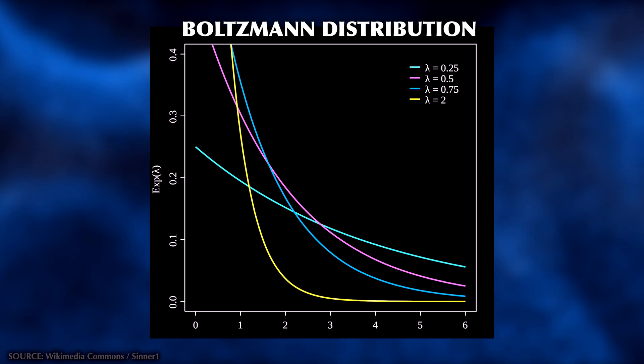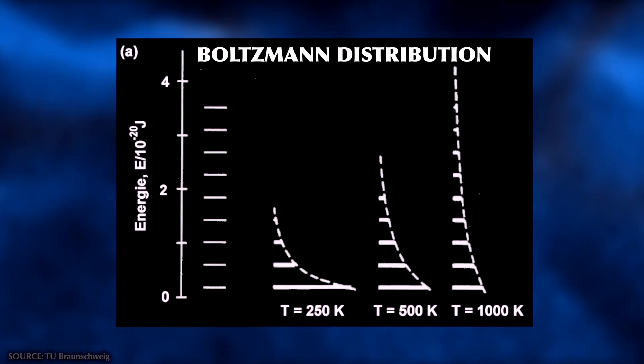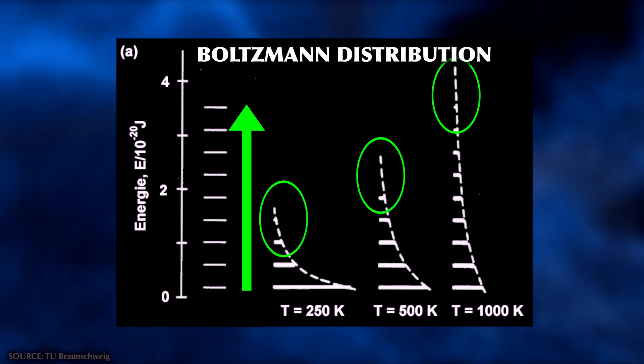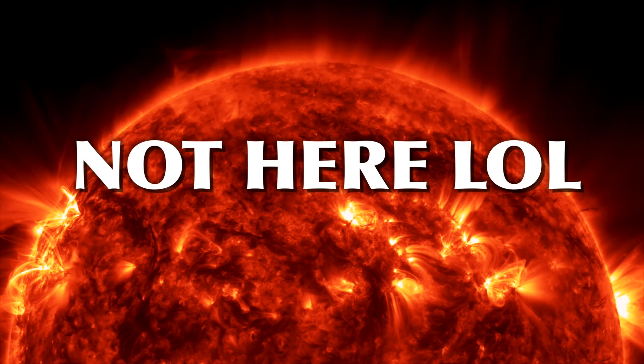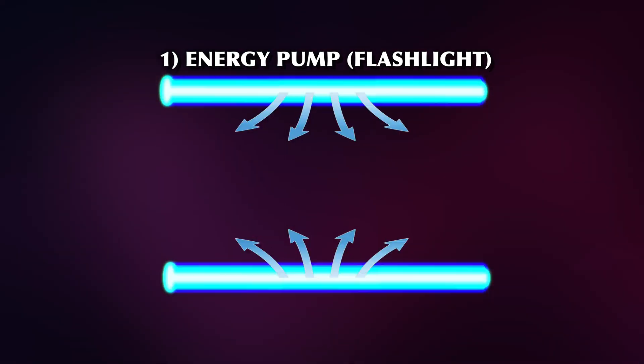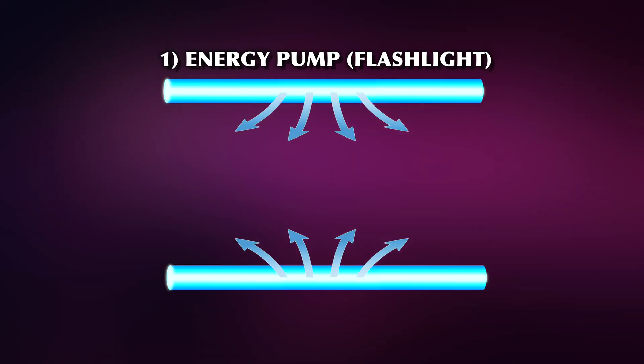Whether an atom is excited or not depends on the temperature of its environment. This is represented by the Boltzmann distribution. It says that the higher the energy, the less likely it is for an atom to get there and then to stay there. This means that the vast majority of atoms under normal conditions are not excited. They're in the ground state. And we can excite them by shooting photons of the correct energy at them. For example, using a high intensity flashlight. This is the first part of a laser. The energy pump. We need this energy supply to create lots of excited atoms.